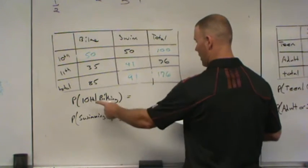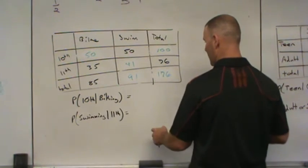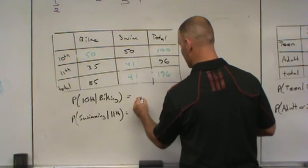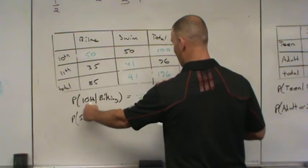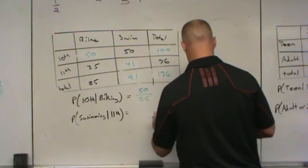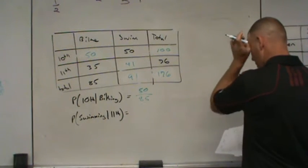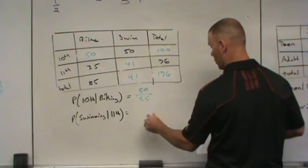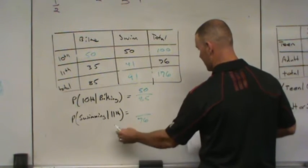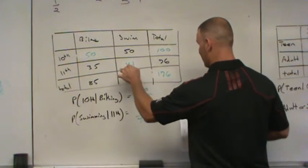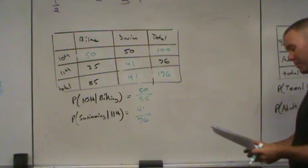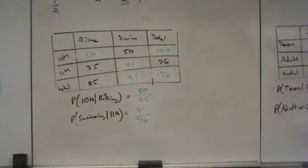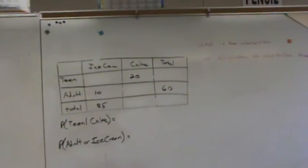Now when you get into the probabilities, what's the probability of tenth given biking? Well, biking is my total population so that's 85. And the probability of tenth biking is 50. So there's your ratio there, 50 over 85. How about swimming given eleventh? Well, eleventh is my total population so that's 76. And swimming at eleventh is 41. So there's my ratio there. And you should be able to answer the question, are eleventh graders more into biking or swimming?